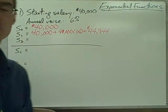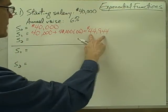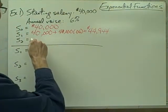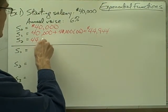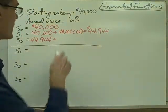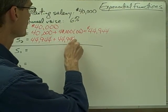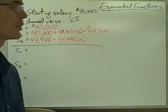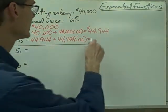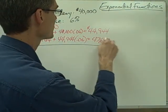If we want to calculate your salary for year two, it's going to be whatever you're making from year one — $44,944 — plus another 6% raise. So that's 44,944 plus 6% of 44,944, or 44,944 times 0.06. If we punch this into our calculator, we get $47,640.